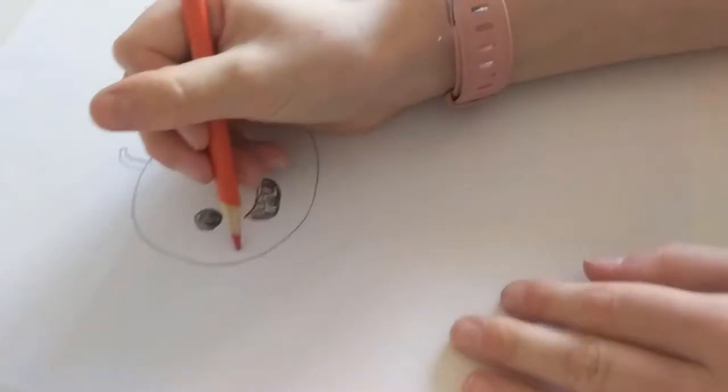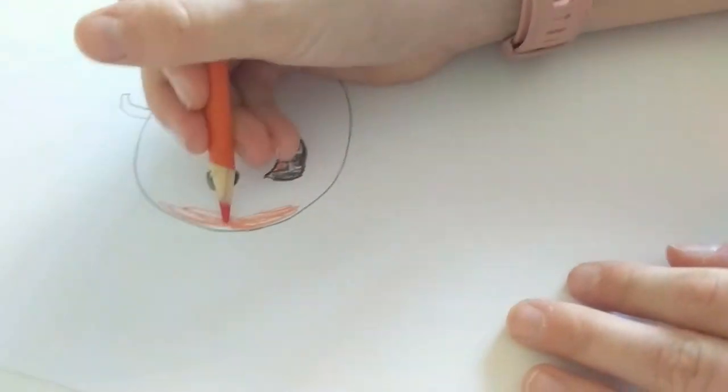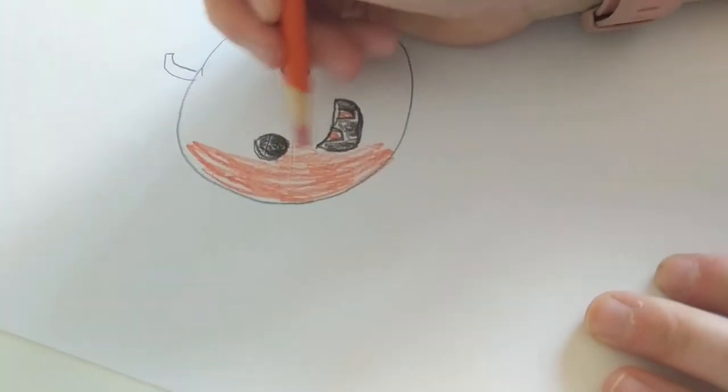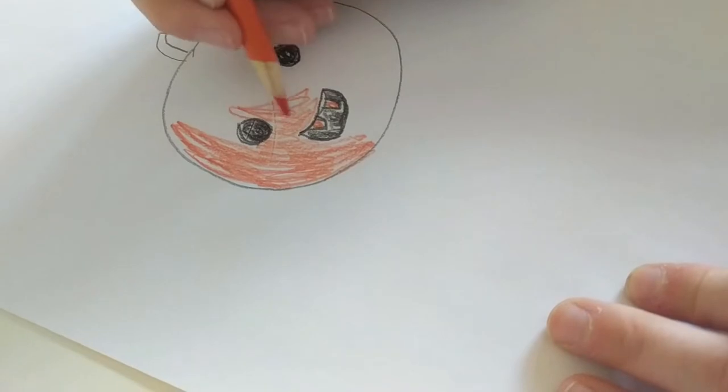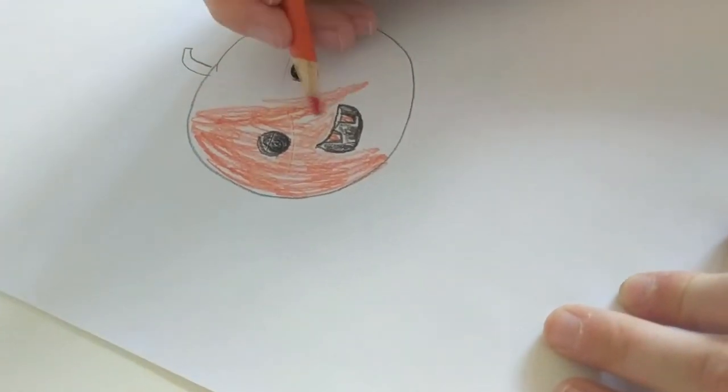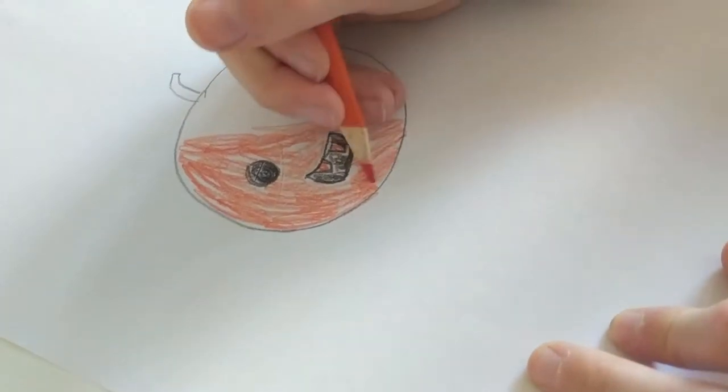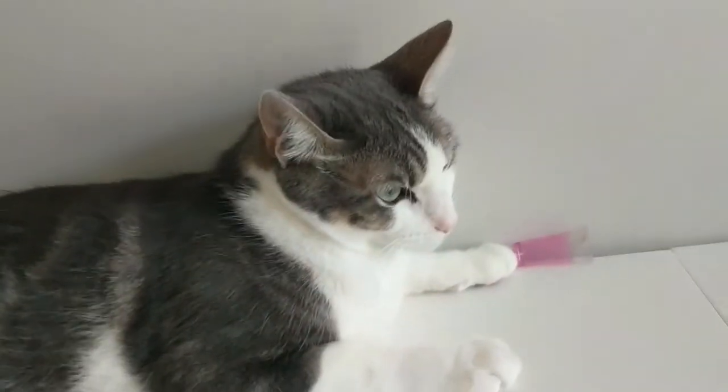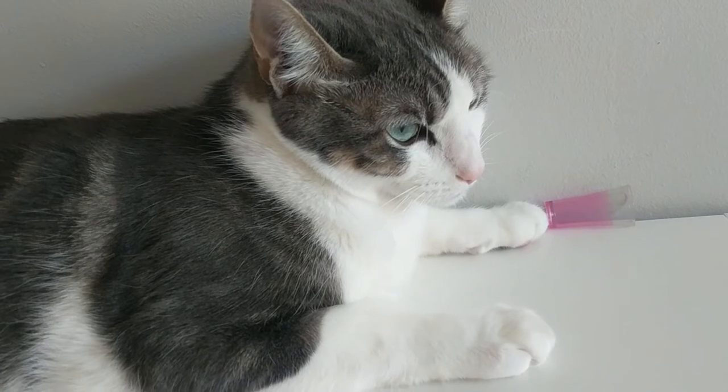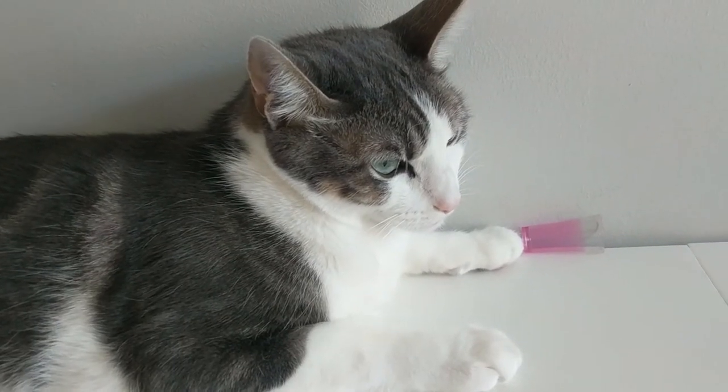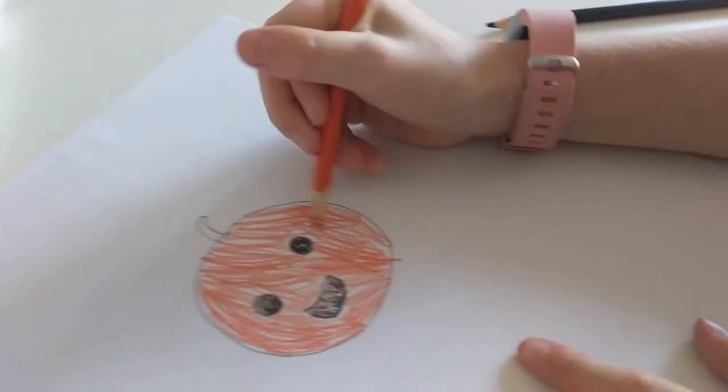All right, so now take your orange and fill in the rest of the pumpkin. We're not going to speed this up or anything so you can kind of do it along with us. We'll have a Christmas special. So guys, when it's Christmas time, we're going to have a live special of how to draw like a Christmas scene.